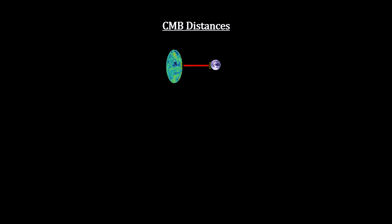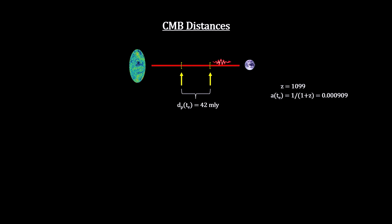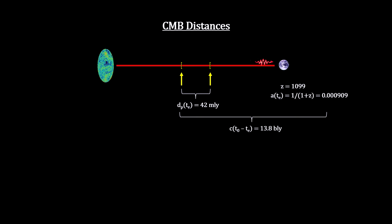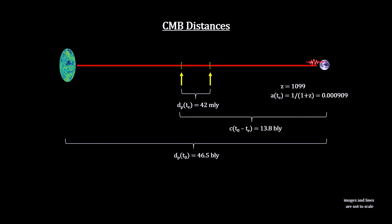The CMB redshift tells us that the light we see now was only 42 million light years away from our location when it was emitted. It traveled for just under 13.8 billion years to reach us, and its starting location is now 46.5 billion light years away, making the diameter of the visible universe 93 billion light years.